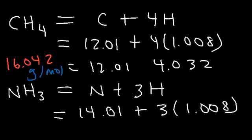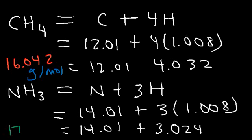So 3 times 1.008 should give you 3.024. And then if we add 14.01 to that, you should get the molar mass for ammonia, and that's about 17.034.